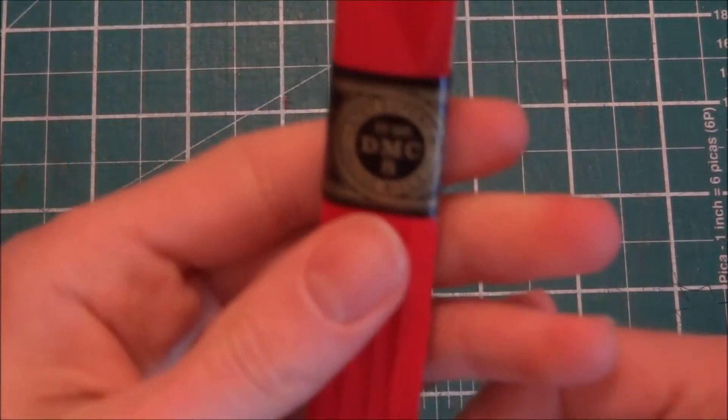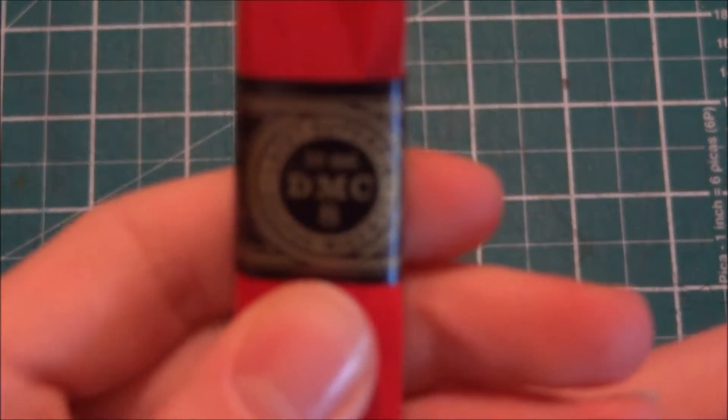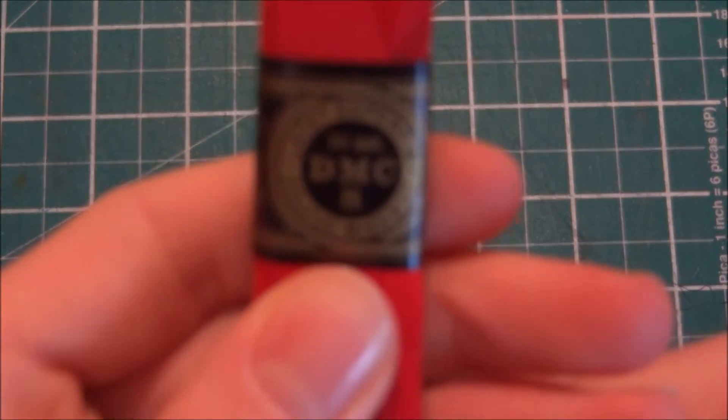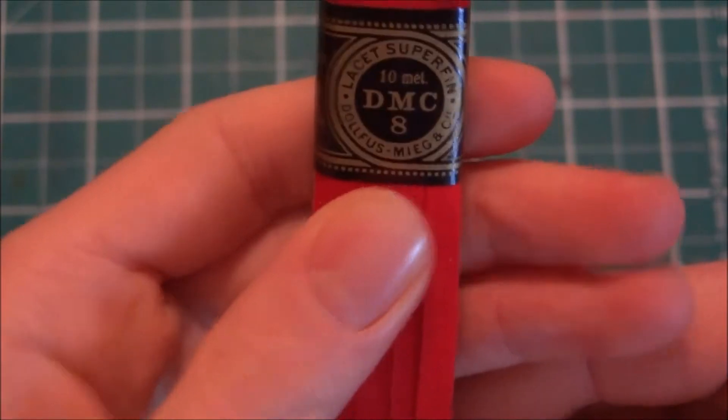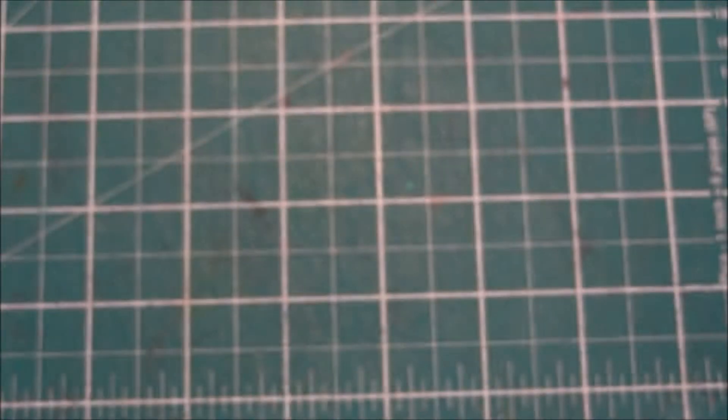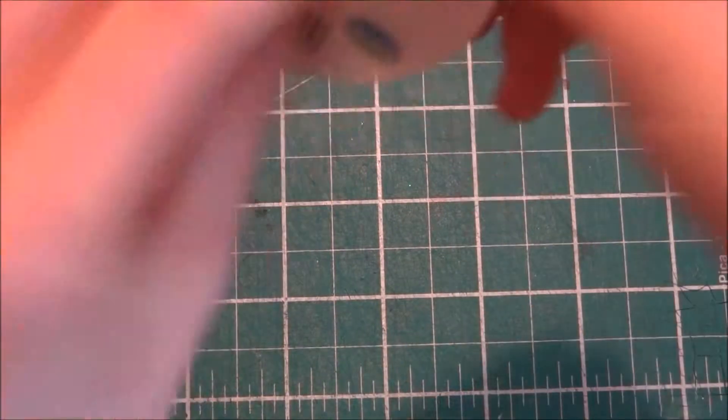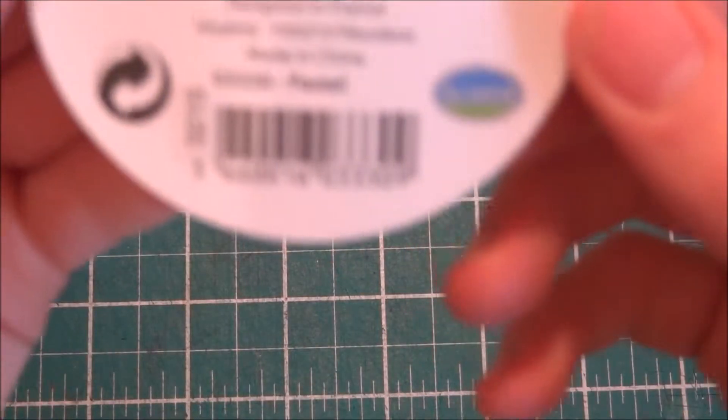Next thing I got was this DMC ribbon. It's just for cards and tying around animals and things.